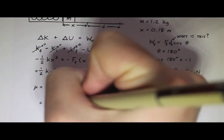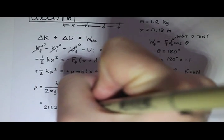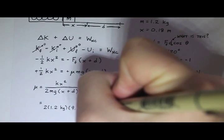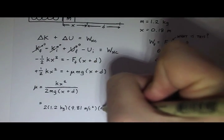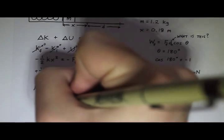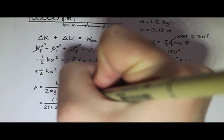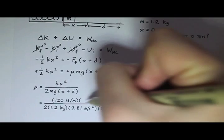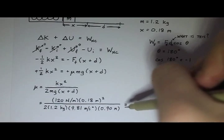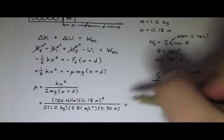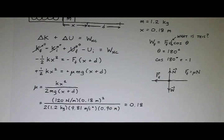So mu equals, so in the denominator I have 2 times the mass, which is 1.2 kilograms. g is 9.81 meters per second squared. x plus d is 0.90 meters. So I don't need to actually solve for them individually. k is 120 newtons per meter. And x is 0.18 meters, and then that's squared. And if you do this on the calculator, you end up getting a value of 0.18 for the coefficient of kinetic friction.